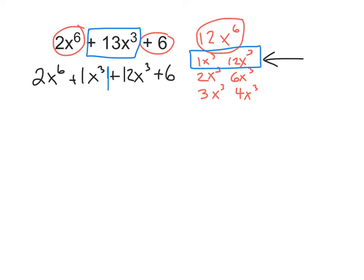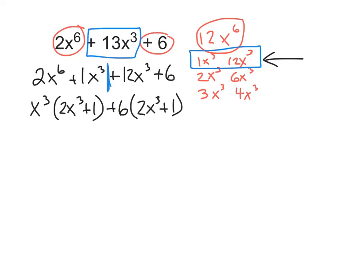We put our line down the middle and factor out the GCF. The GCF of the left side is x to the 3rd, and we're left with 2x to the 3rd plus 1. On the right-hand side, we factor out a 6, and we're left with 2x to the 3rd plus 1, because 6 divided by 6 is 1. Our parentheses do match. We write 2x to the 3rd plus 1 times x to the 3rd plus 6. That is our final answer for this problem.